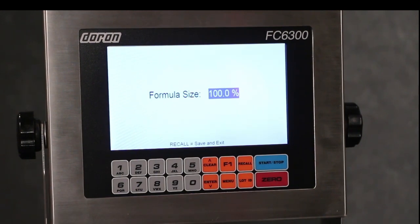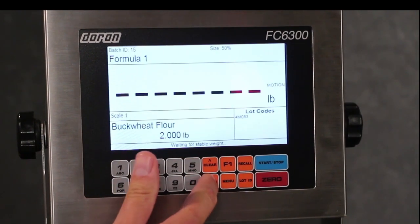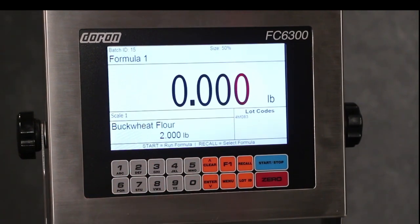Formulas aren't always run at 100%, so we've designed the FC6300 to allow for this variable. For our demonstration, I will be running the batch at 50%. Once I adjust the batch to 50%, all the ingredients or components of the formula will automatically be reduced to 50%.